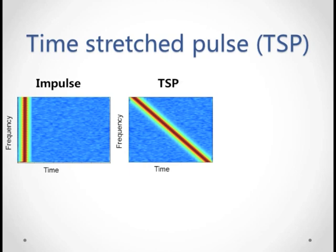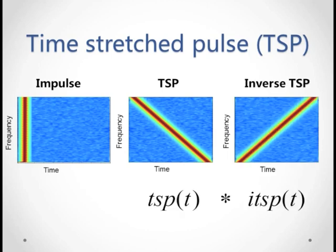The neat part is that convolving a TSP with its inverse gives us our desired impulse delta. This definition is important for understanding later on, so please remember it.